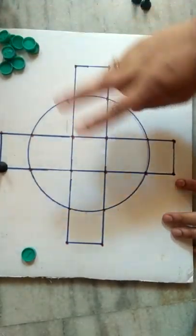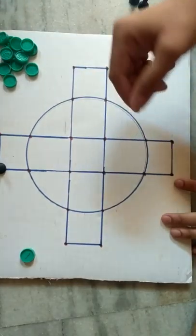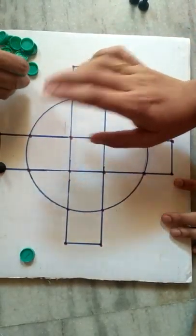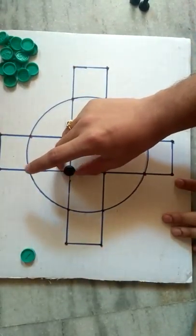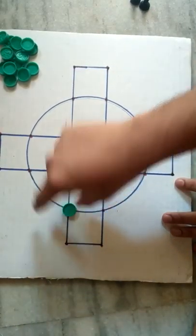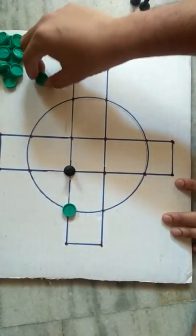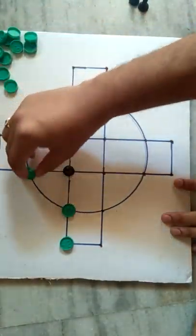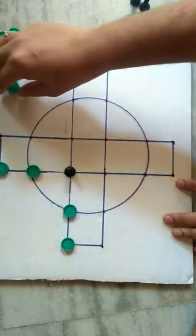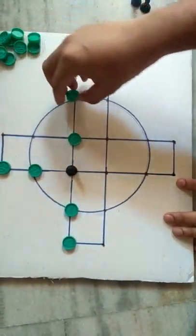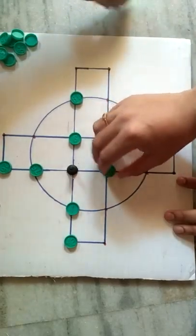Similarly, if the tiger is here and there is no movement for the tiger - meaning the tiger is blocked in this way - then the tiger lost.